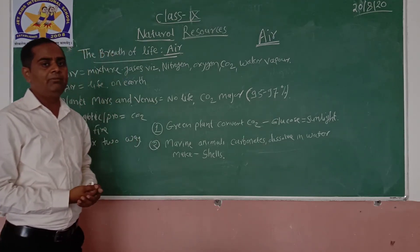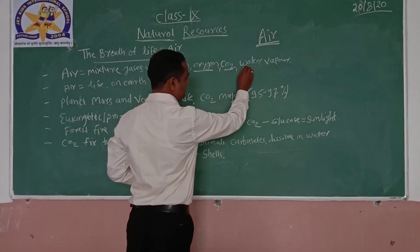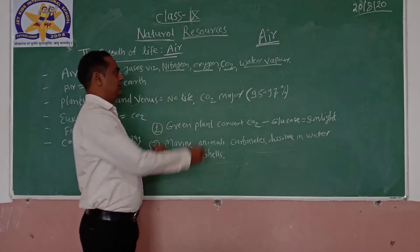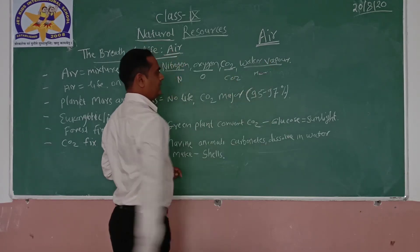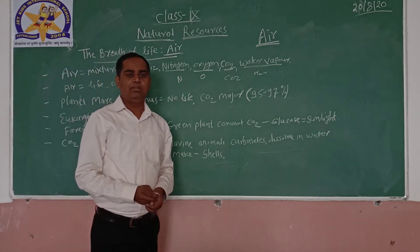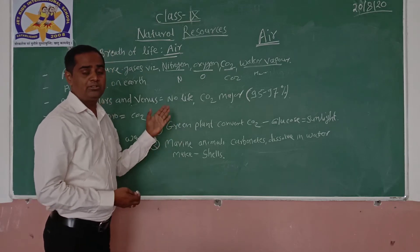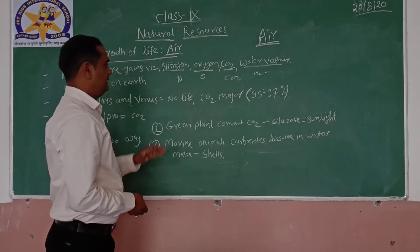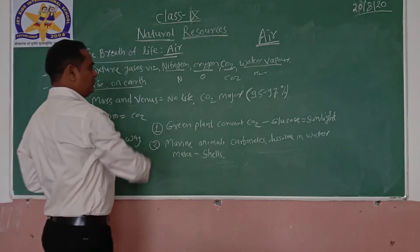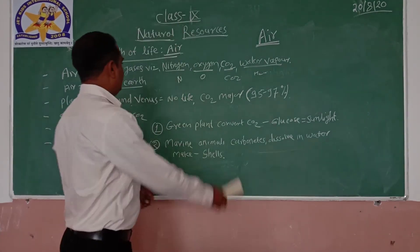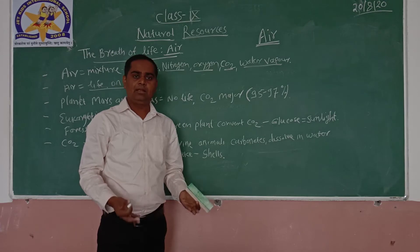Without air we cannot imagine life on earth. Air is a very important factor for life on earth. As we know, air is a mixture of nitrogen, oxygen, carbon dioxide, and water vapor. There is air on the earth, and that's why there is life on earth, because many animals and organisms live because of this air.